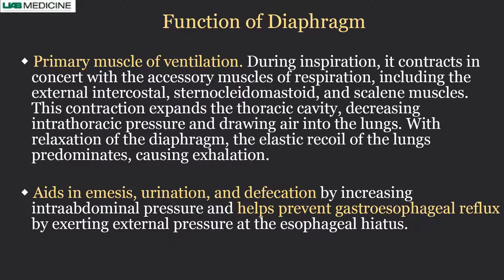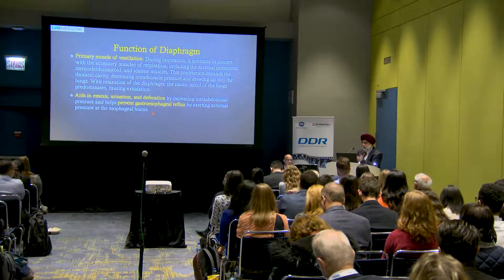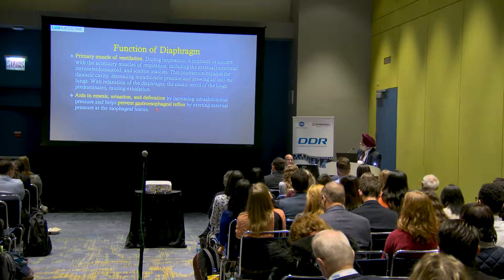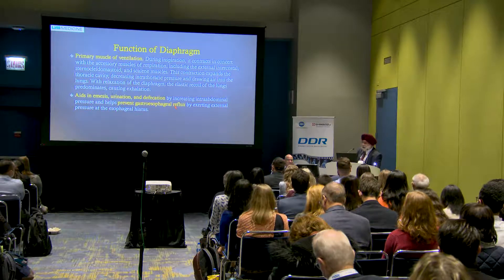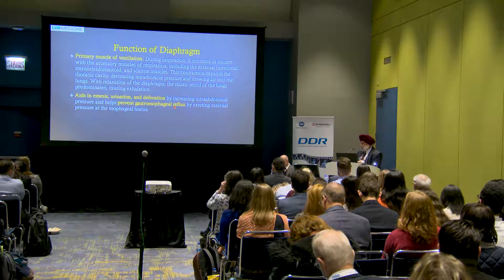The diaphragm also decreases intrathoracic pressure, which causes increased venous blood flow back to the heart. In addition to ventilation, it aids in emesis, urination, and defecation — you have probably experienced using your diaphragm for those. It also prevents gastroesophageal reflux by exerting external pressure on the esophageal hiatus.